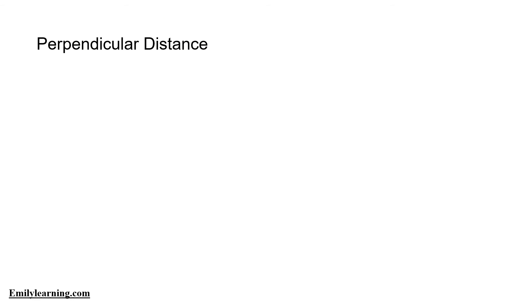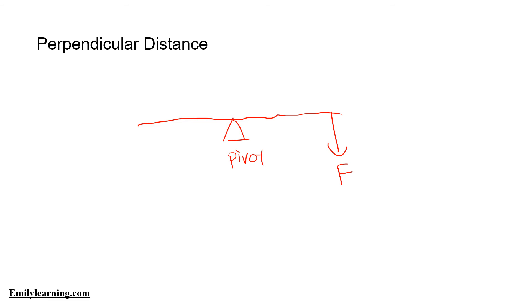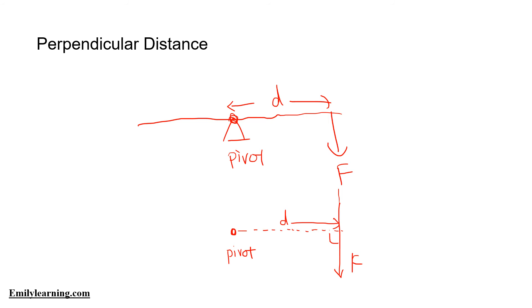I want to talk about perpendicular distance. Perpendicular distance is defined as the distance from the line of action of the force to the pivot. In the common seesaw example, the pivot is here and the force is here — the perpendicular distance is the shortest distance from the pivot to the line of action of the force.